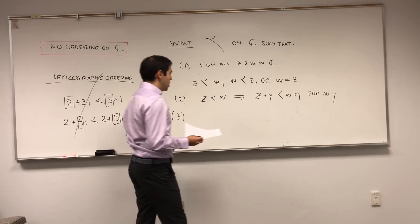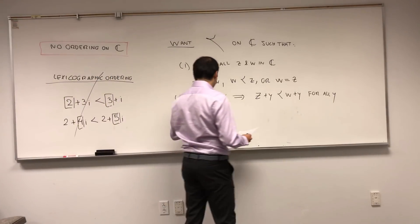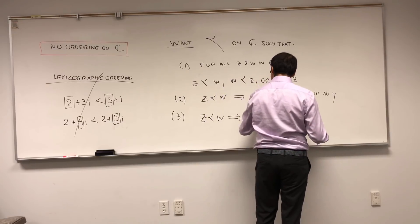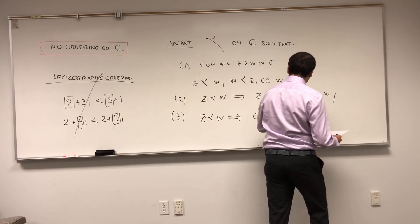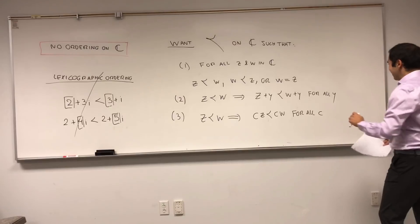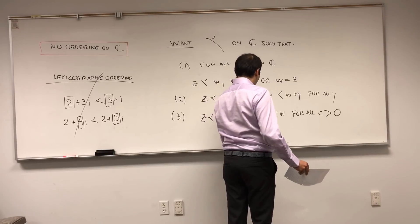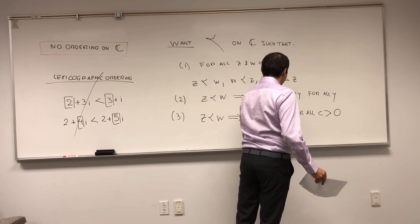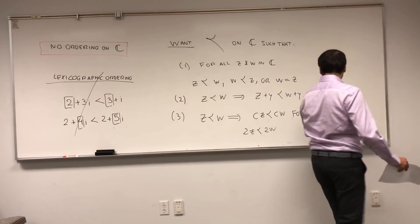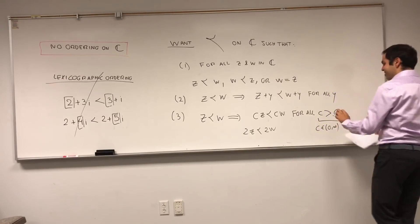And lastly, we want multiplication by a positive number to preserve the ordering. So Z less than W implies CZ is less than CW, for all C positive — meaning C is in (0, ∞) in the real numbers. For example, 2Z should be less than 2W.